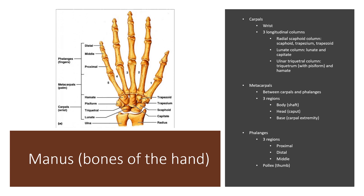The manus are the bones of your hand. The carpals are your wrist bones, organized into three longitudinal columns. The radial scaphoid column includes the scaphoid, trapezium, and trapezoid. The lunate column contains the lunate and the capitate. The ulnar triquetral column includes the triquetrum with the pisiform and the hamate. Metacarpals are located between your carpals and your phalanges, and have three regions: the body or shaft, the head or capitate, and the base or carpal extremity. Your phalanges are your fingers or digits, with proximal, distal, and middle regions. Your thumb is called your pollux.